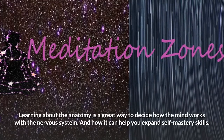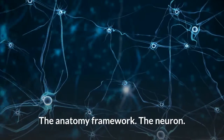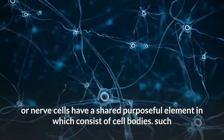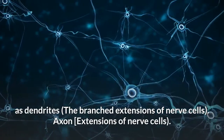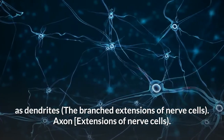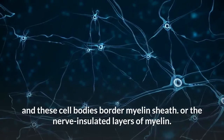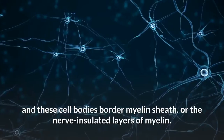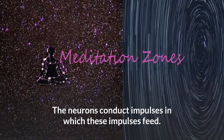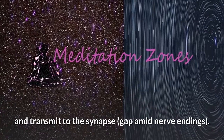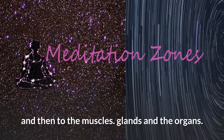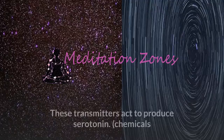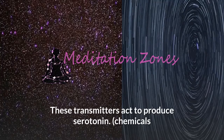Understanding anatomy can help you expand self-mastery skills. The neuron or nerve cells have a shared purposeful element consisting of cell bodies such as dendrites — the branched extensions of nerve cells — axon extensions of nerve cells, and these cell bodies border the myelin sheath, or the nerve insulated layers of myelin. The neurons conduct impulses which feed and transmit to the synapse gap amid nerve endings and then to the muscles, glands, and organs.